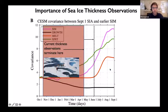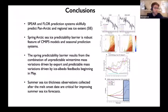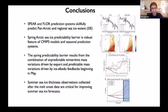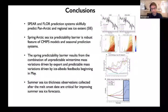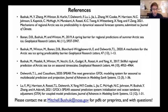In summary, the SPEAR and FLOR prediction systems skillfully predict both pan-Arctic and regional sea ice extent. The spring Arctic sea ice predictability barrier is a robust feature of CMIP5 models and seasonal prediction systems. The spring predictability barrier results from the combination of unpredictable wintertime mass variations driven by ice export and predictable mass variations driven by ice albedo feedbacks beginning in May. These results imply that summer sea ice thickness observations collected after the melt onset date are especially critical for improving summer sea ice forecasts.